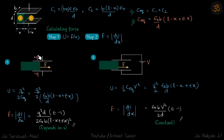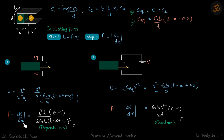For the two cases we write the energy differently. When charge is constant we write potential energy as Q²/(2C_eq), and when voltage is constant we write it as ½·C_eq·V². We substitute the value of C_equivalent — which is a function of x — in both cases, then differentiate with respect to x to get the force.